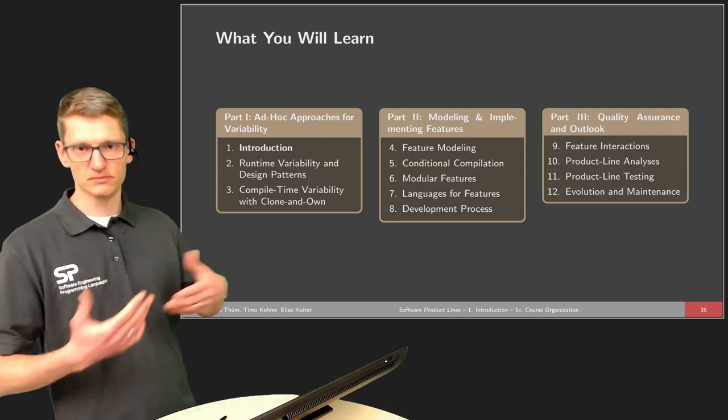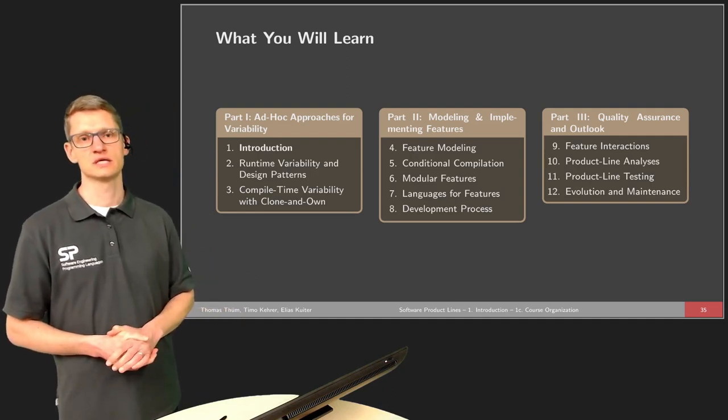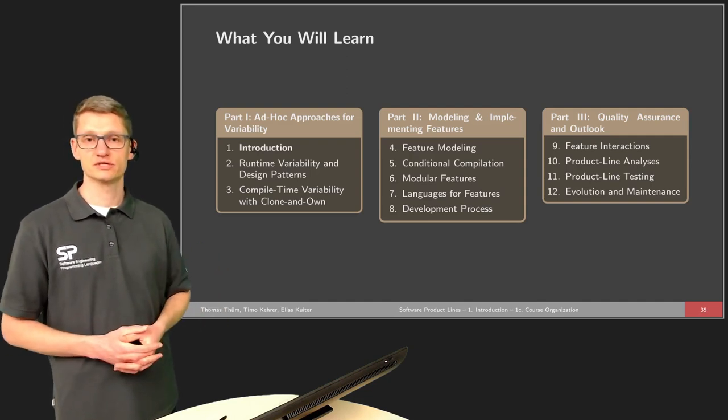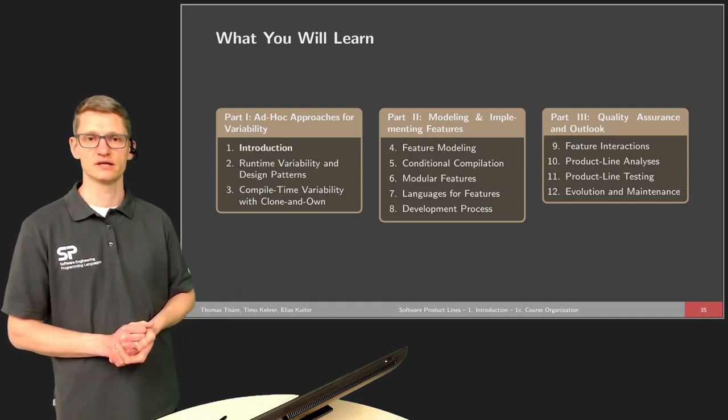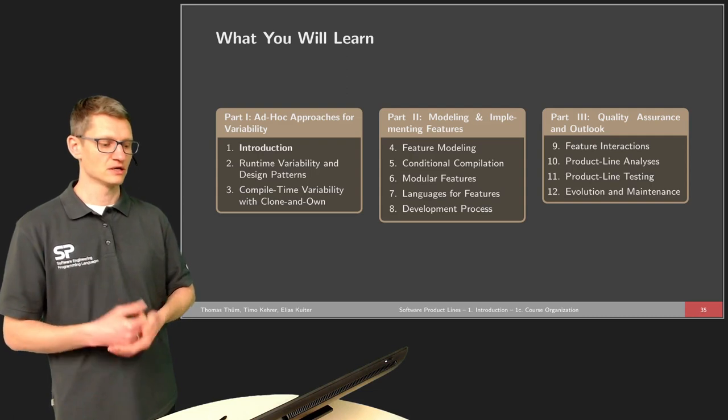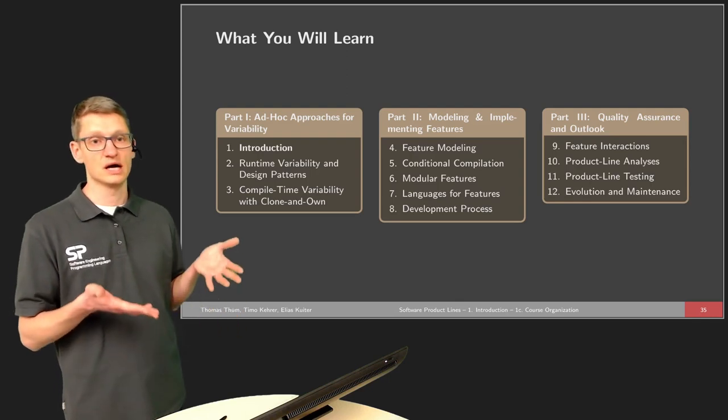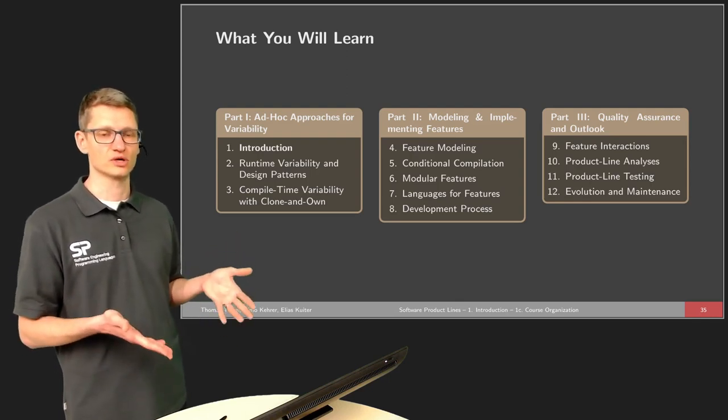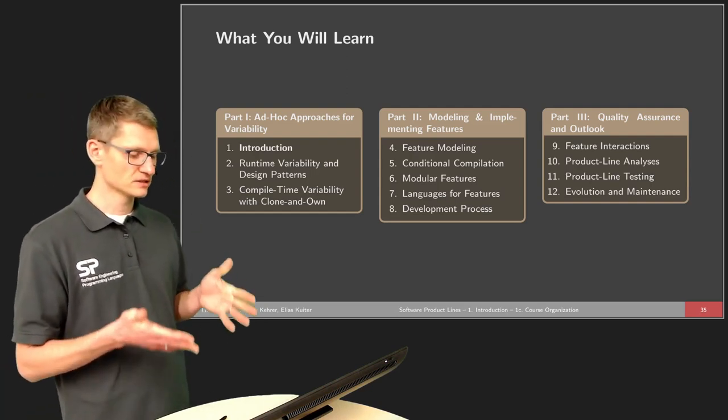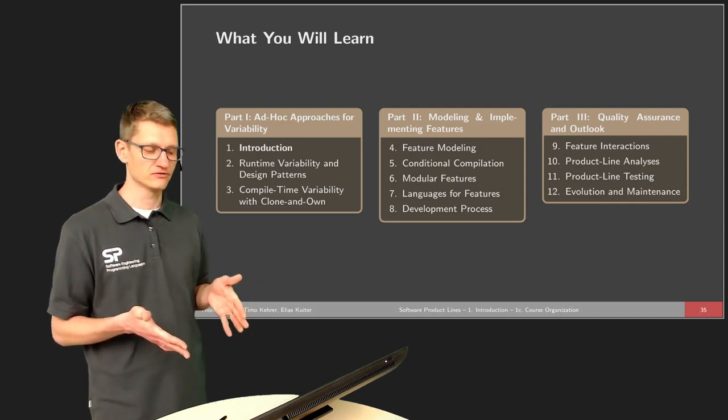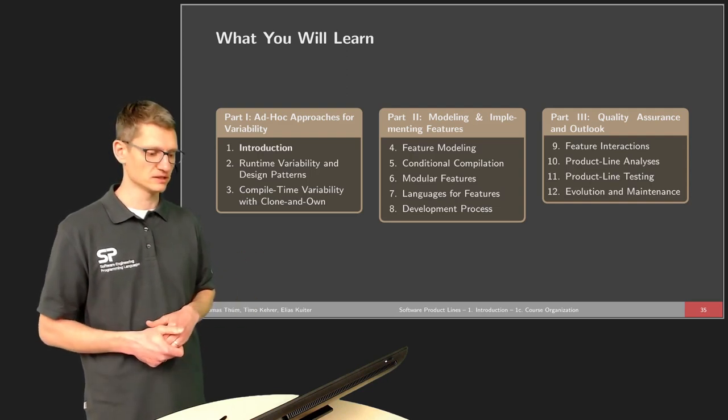After talking about this modeling and implementation of features, we will in the last part talk about quality assurance, and we have three lectures devoted to this topic. One on feature interactions. I already introduced feature interactions briefly in the last part of the lecture, and first we want to talk about how to deal with feature interactions once we found them. And then we will talk about how to find, how to do quality assurance for product lines statically in lecture 10 and dynamically in lecture 11. Meaning that in lecture 10 and lecture 11, we actually want to identify feature interactions automatically or at least semi-automatically.